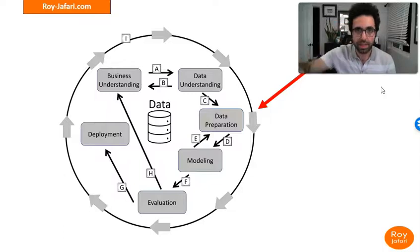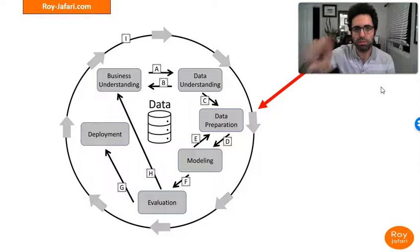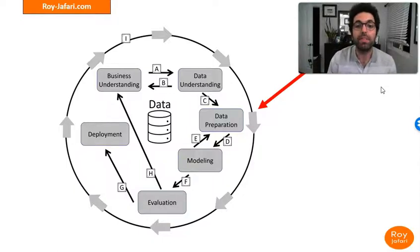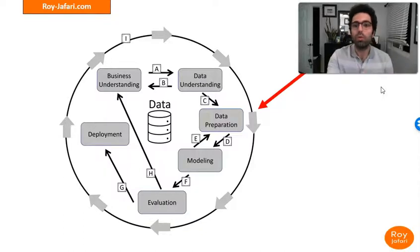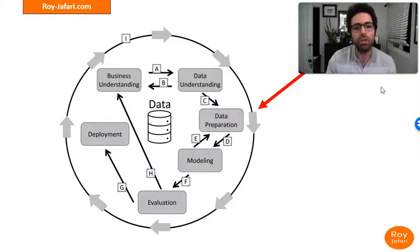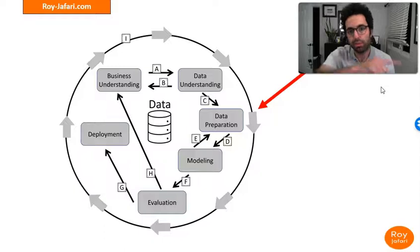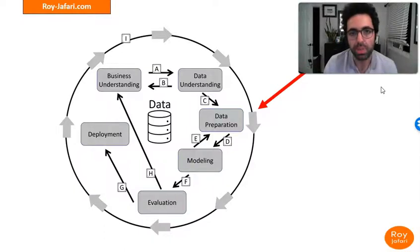The last thing to talk about is the cyclic, continuous nature around this process. Even when we do have a successful deployment, that deployment of a data mining model will change the business itself — it can create new problems and new situations that can be helped by data mining. That is why there is a continuous cycle around CRISP-DM.